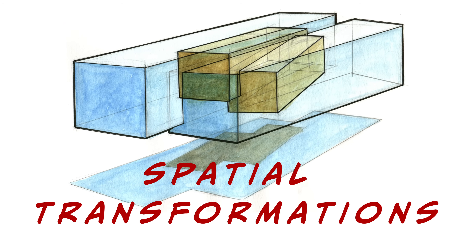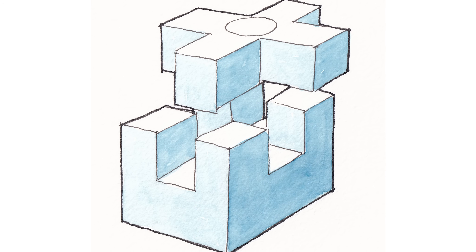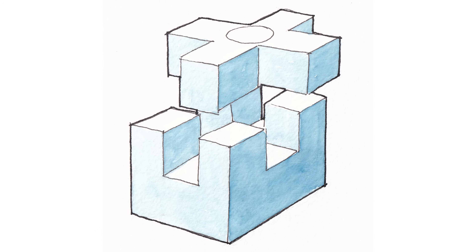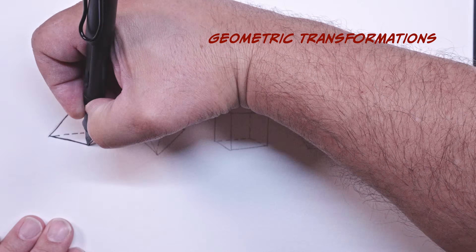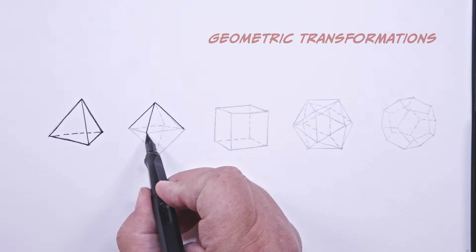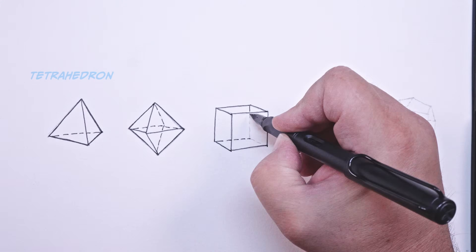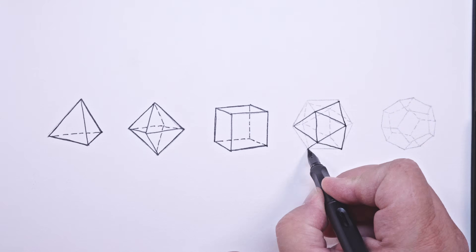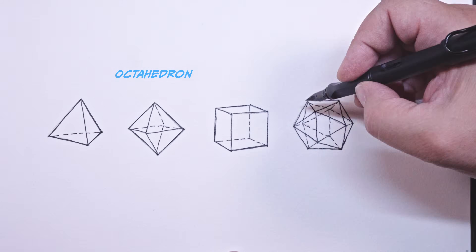Spatial transformations can be understood as the transformation of primary solids through manipulation of planes of the volume. The mind naturally envisions primary solids like cubes, spheres, and pyramids, and these can be modified to give the appearance of transformation.